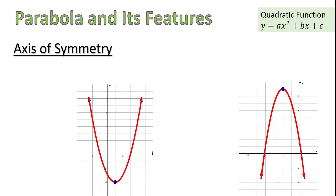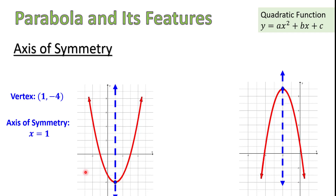The next important feature of parabola is the axis of symmetry. You probably already notice that parabola has a symmetric shape. Any symmetric object has what we call an axis of symmetry. The axis of symmetry is the vertical line that passes through the vertex of the parabola. If you imagine folding the parabola along this axis of symmetry, both sides of the parabola should match. We describe the axis of symmetry by its equation. Every vertical line has an equation of the form x equals a number — specifically, the number at which that vertical line crosses the x-axis.